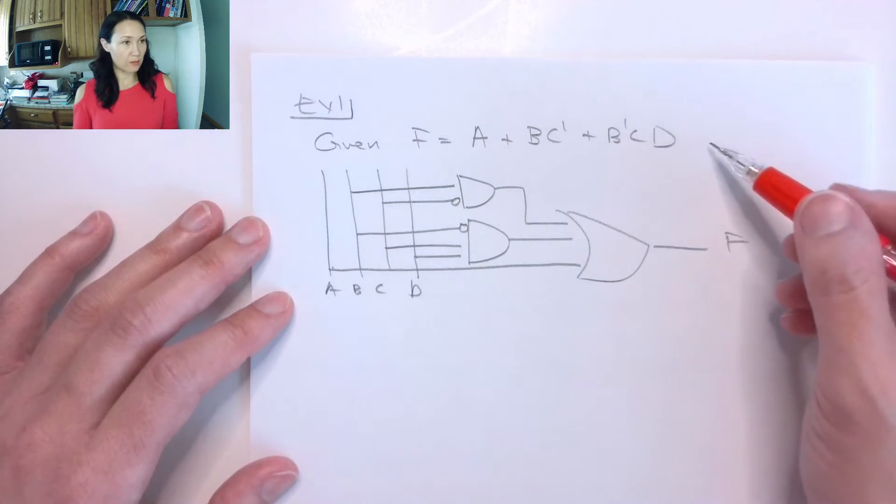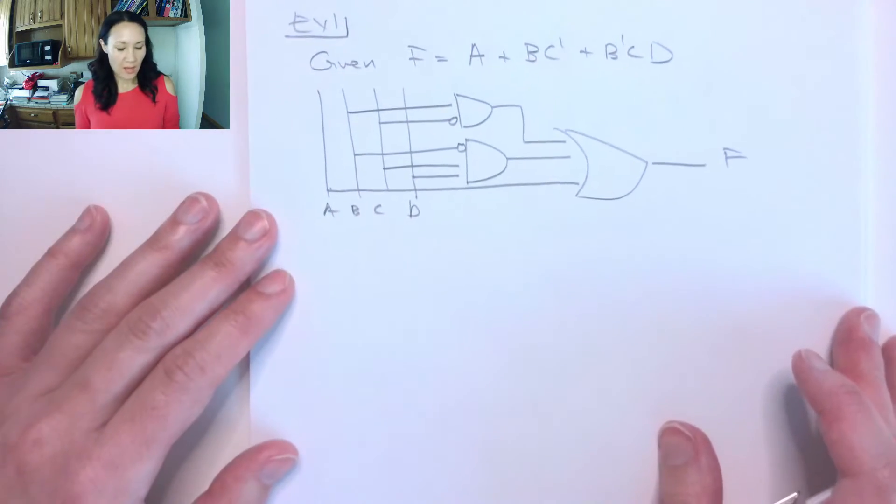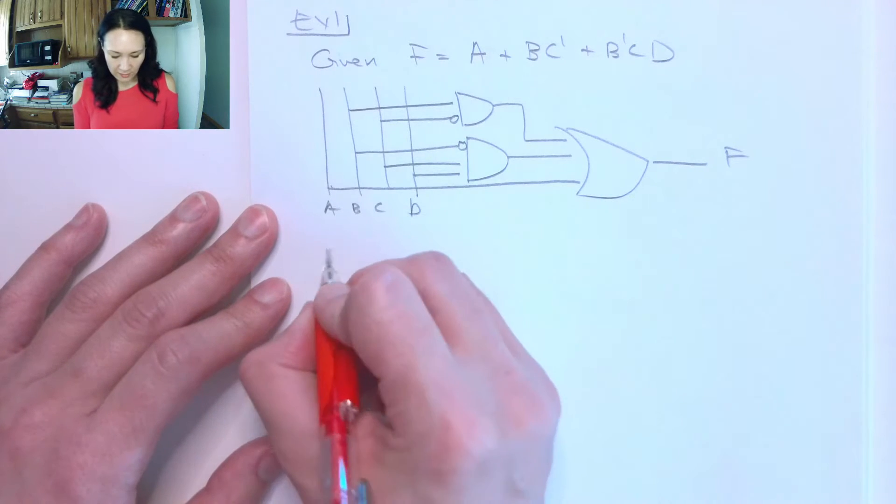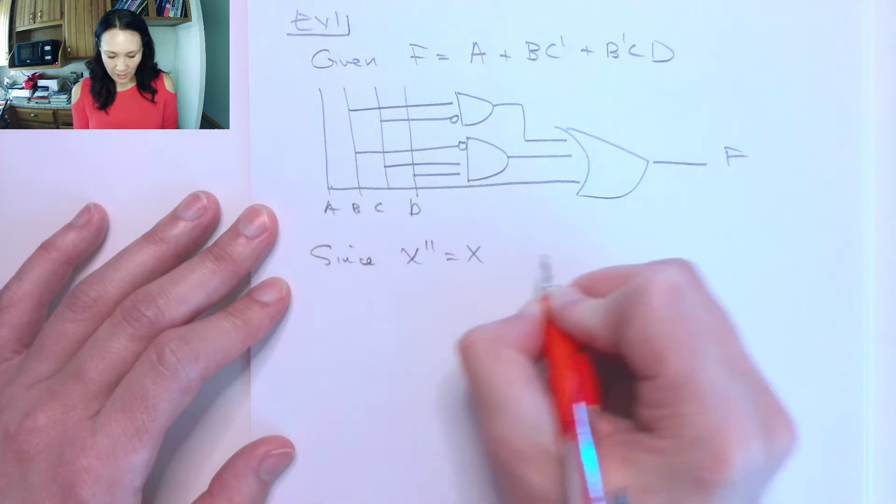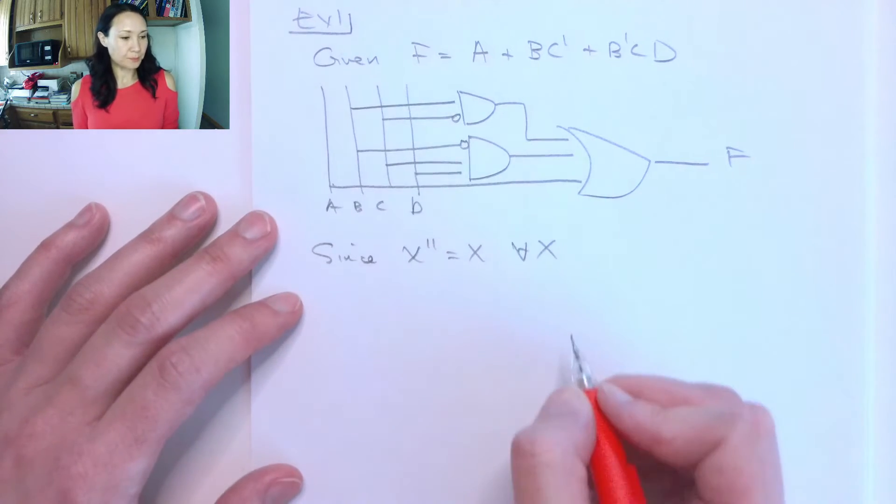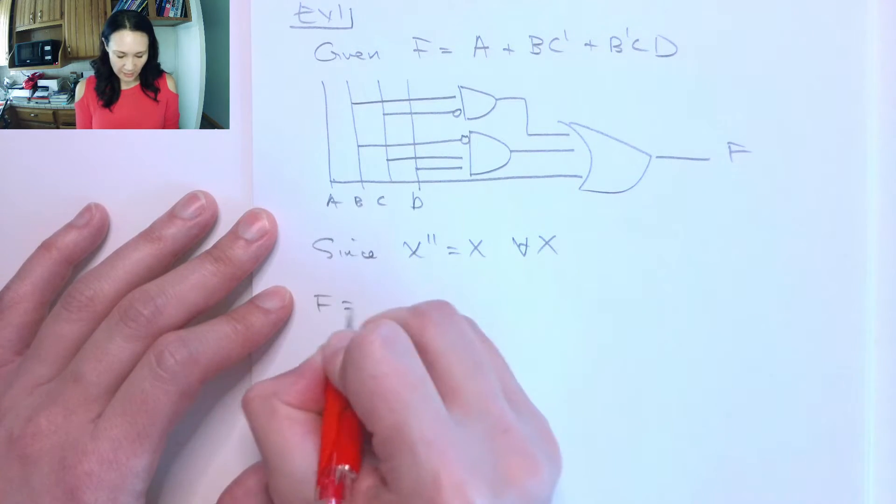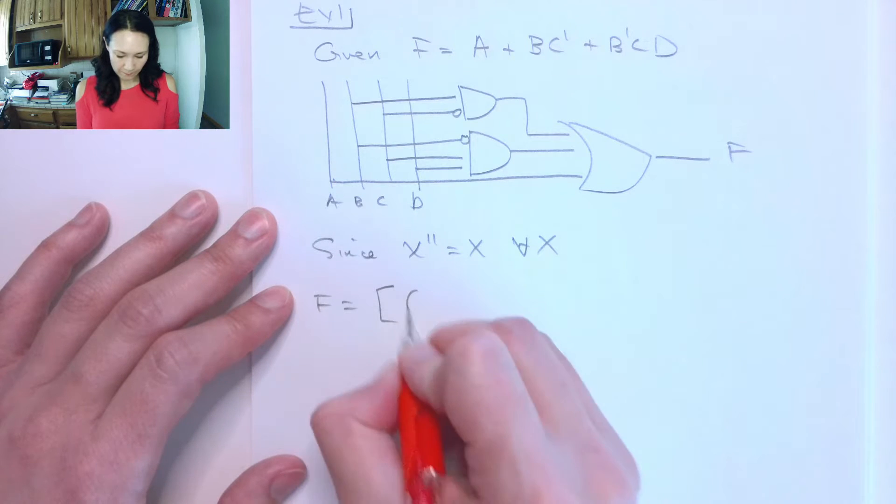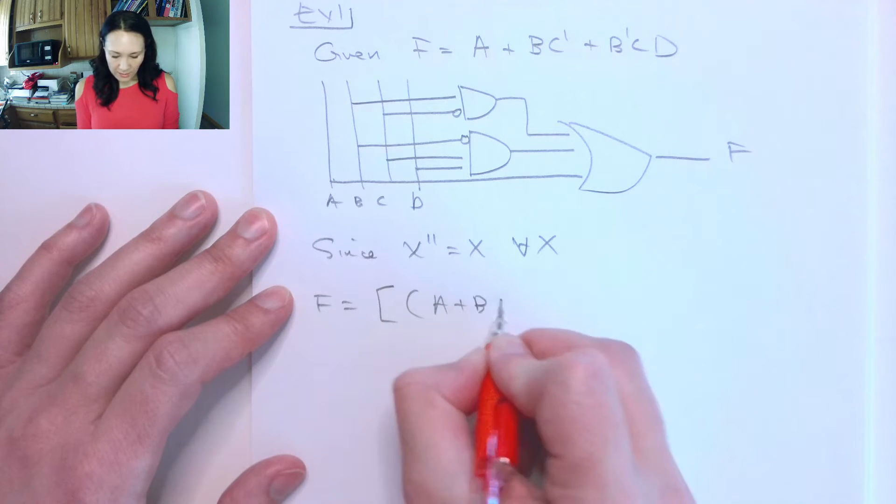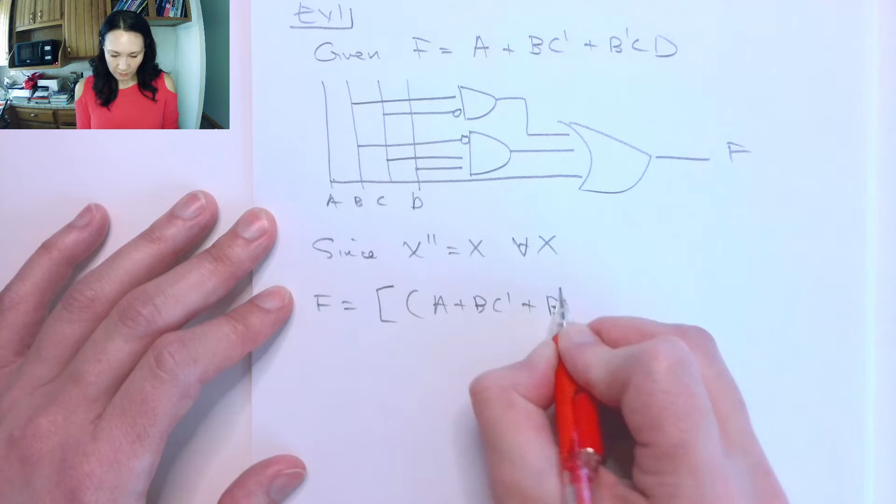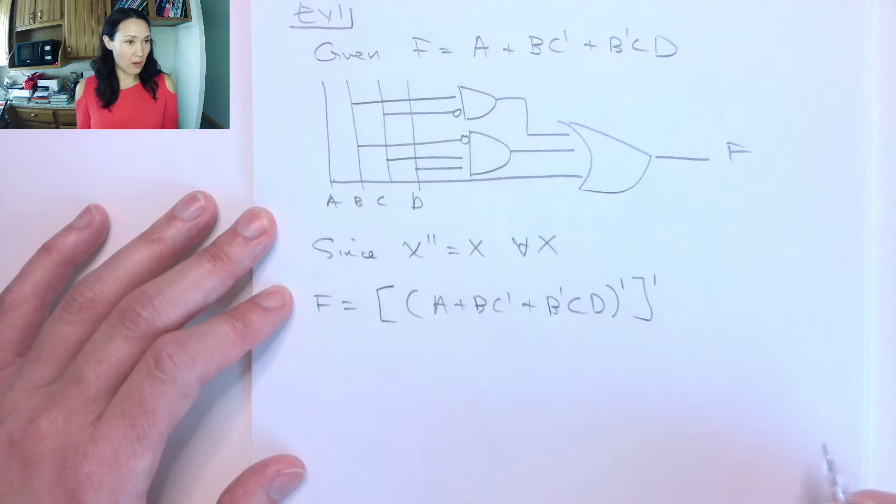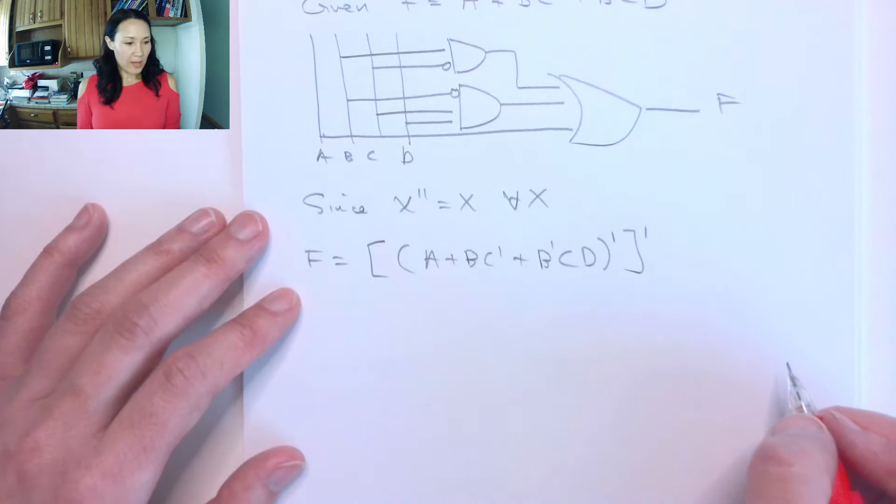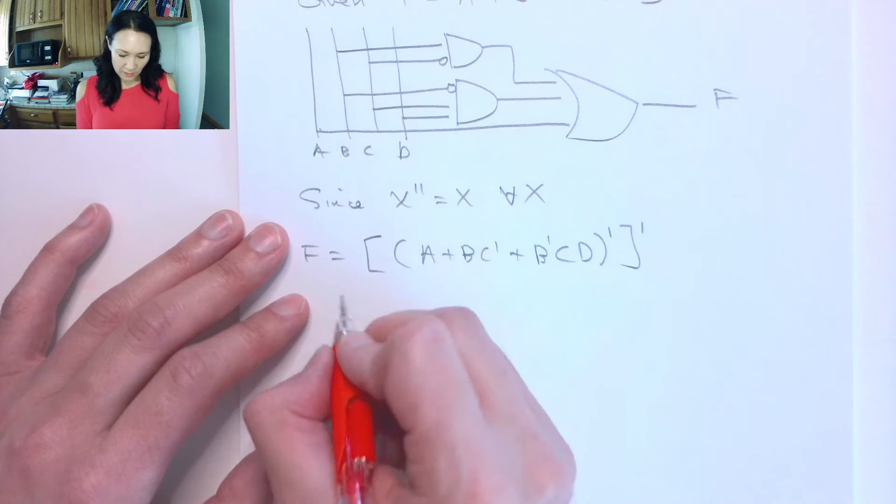So here is the diagram that corresponds to this function F. Now we can modify this, since we have that x double prime is equal to x for any x, we can say that F is A OR BC NOT OR B NOT CD NOT AND NOT.